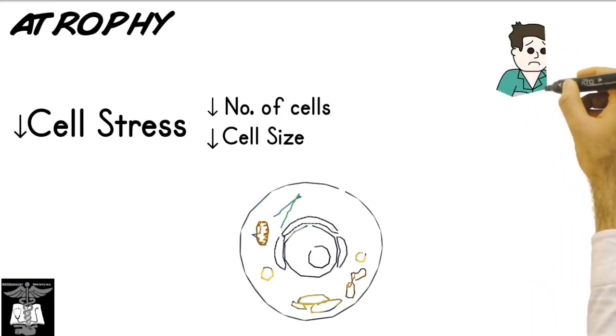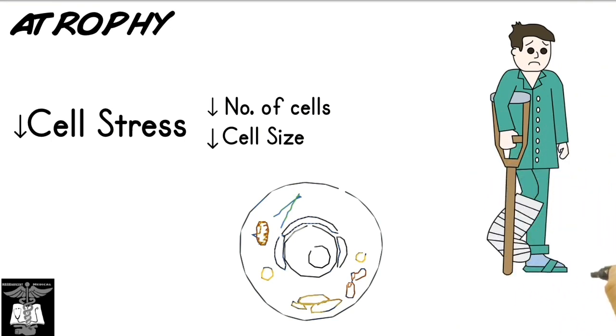An example would be a person who wears a cast for a long time and doesn't use certain muscles. Those muscles will atrophy and shrink over time.